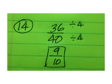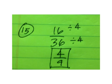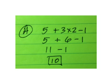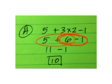On number 14, the highest number that goes into both is 4. Divide both by 4 to get 9 over 10. On number 15, the highest number again is 4. Divide both by 4 to get 4 over 9. On the extra credit, you had to do 3 times 2 to get 6, but don't do 6 minus 1. Do 5 plus 6 to get 11. Then minus 1, which is 10.